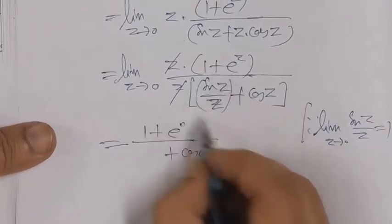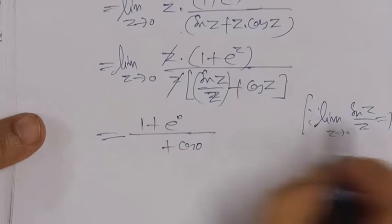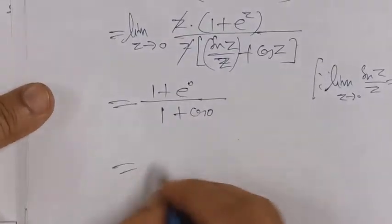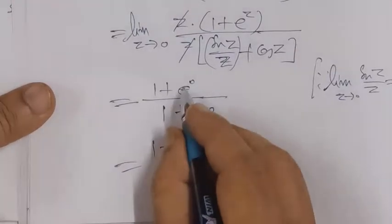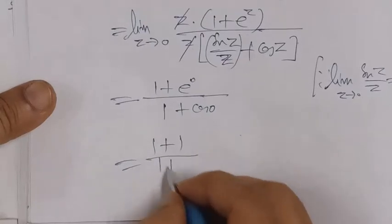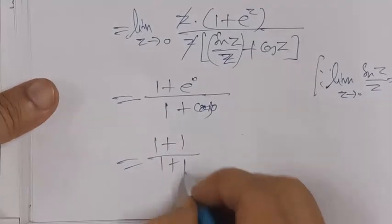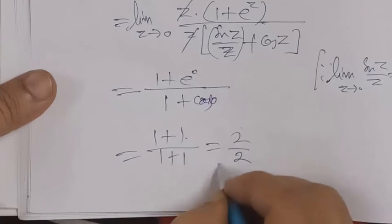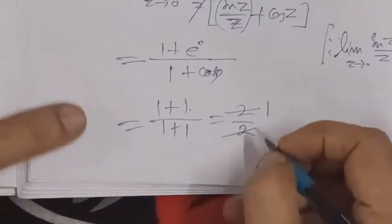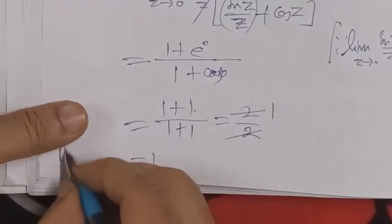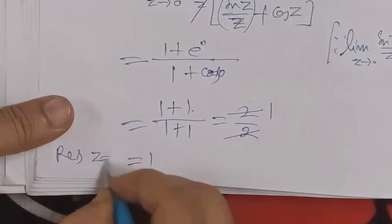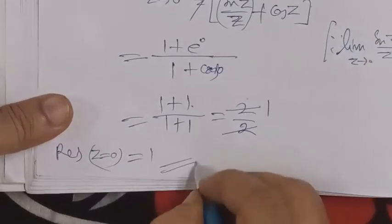Substituting the values: e^0 equals 1, cos 0 equals 1. So 1 + 1 = 2 in the numerator. The denominator also has 2, which cancels, leaving 1. Thus, the residue at z = 0 equals 1.